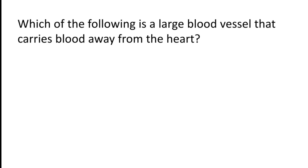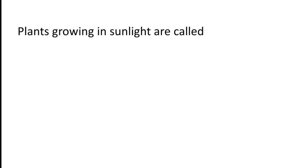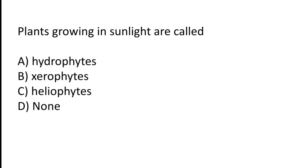Which of the following is a large blood vessel that carries blood away from the heart? Options: nerve, artery, vein, or capillary? The correct answer is option B — artery is the large blood vessel that carries blood away from the heart.